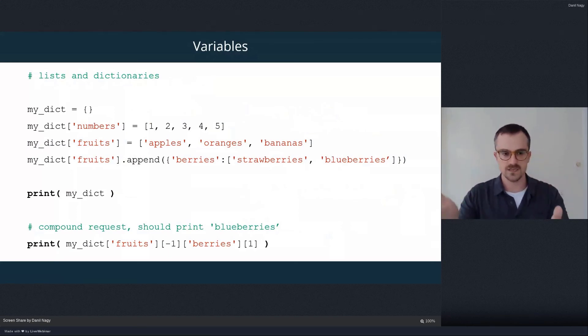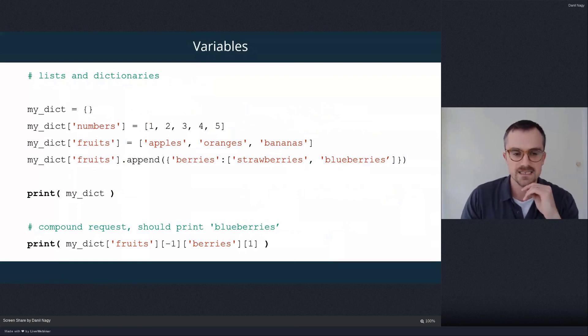Now we can add another key to our dictionary called fruits. And that is also itself a list that contains three strings, apples, oranges, and bananas.